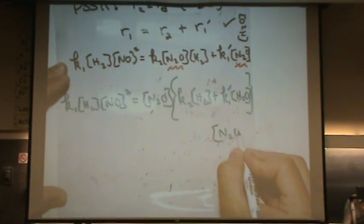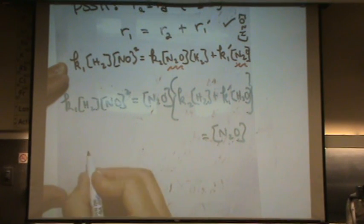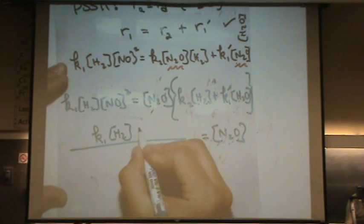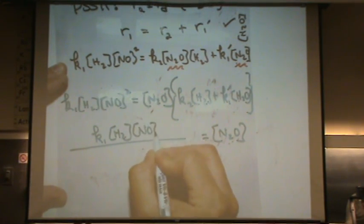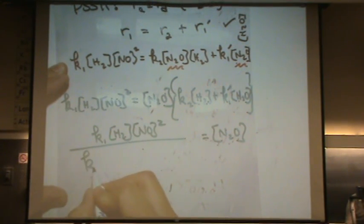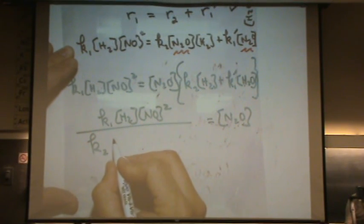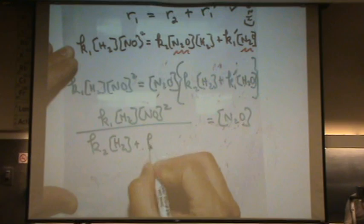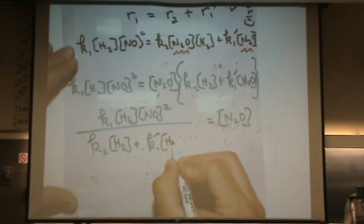N2O equals, big one, K1 times H2 times NO squared over K2 H2 plus K1 prime H2O.